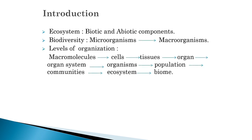We have already learned about ecosystems. An ecosystem is basically made up of biotic as well as abiotic components. Biotic components are nothing but living organisms, while abiotic components are nothing but non-living components. Biodiversity comprises microorganisms to macro-organisms — micro means smallest, like viruses, bacteria, etc.